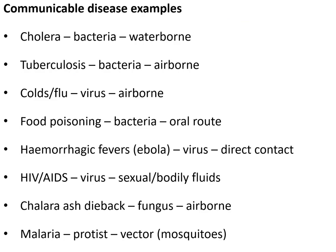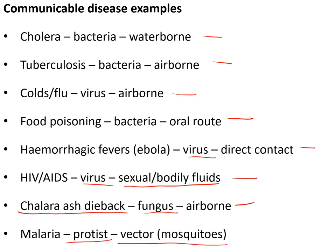Specific diseases: Cholera — bacteria, waterborne, causes severe diarrhoea. Tuberculosis — bacteria, airborne, causes lung inflammation and coughing blood. Colds and flu — viruses, airborne. Food poisoning — bacteria on contaminated food (oral route). Haemorrhagic fevers like Ebola — viruses spread by direct contact. HIV leading to AIDS — virus spread through sexual contact or bodily fluids. Ash dieback — fungal, airborne disease of trees. Malaria — caused by a protist spread by mosquito bites (vector).